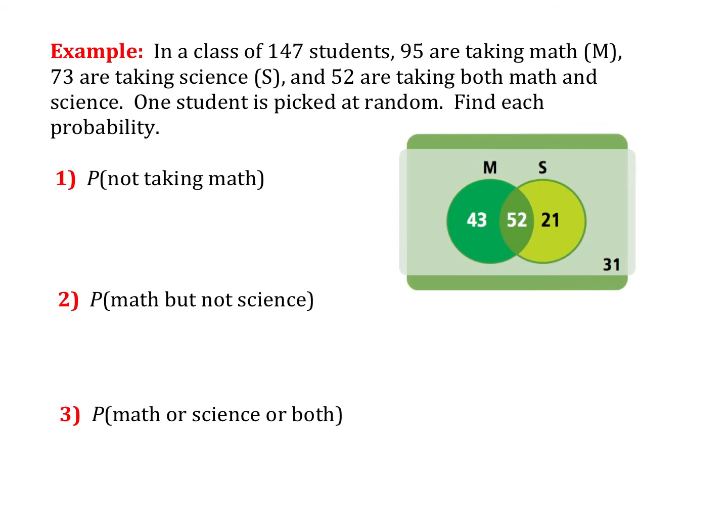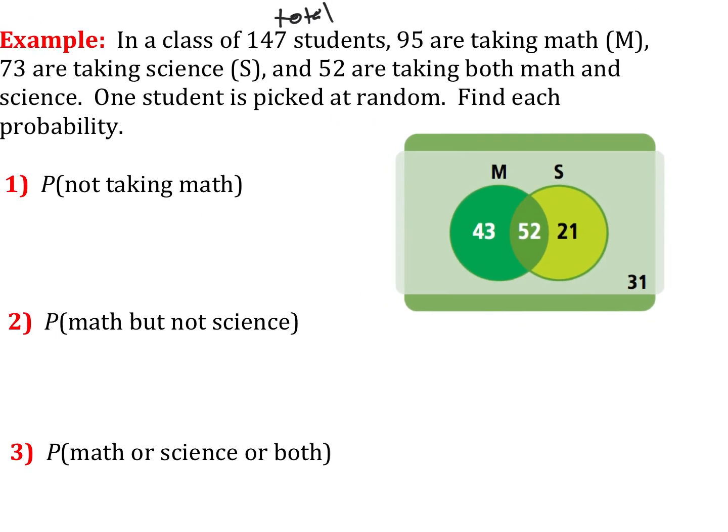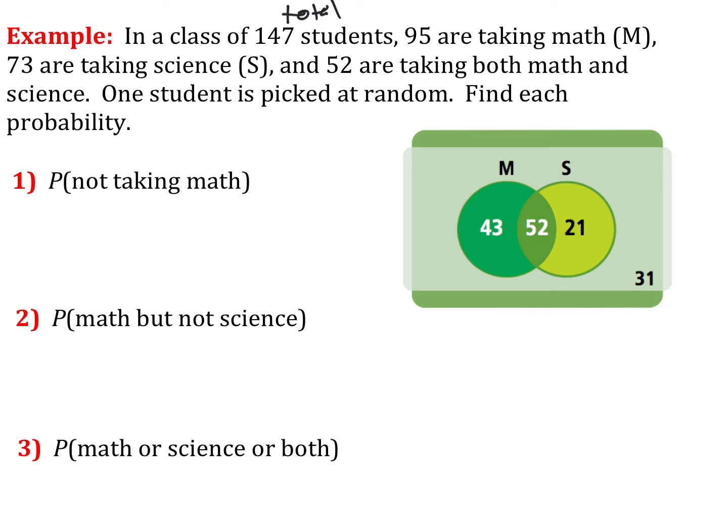In a class of 147 students, that's our total, 95 are taking math, 73 are taking science, and 52 are taking both math and science. One student is picked at random. Find each probability. Now, when we do these, there's a specific pattern you're going to want to do to label. This is called a Venn diagram. First thing you're going to want to do is always start with the overlap. So in this case, our overlap was 52. So we want to plant our 52 there first. So we have 52 taking both. Let's handle that first.